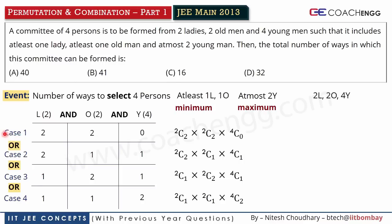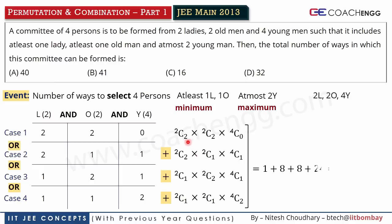So whatever number of ways come from each case, we add them together — this is the addition principle. Basically the idea is: cases represent different ways of completion; within each case, multiply the selection number of ways; then add across all cases. If you evaluate all these values using the NCR formula, the answer comes out to 41.